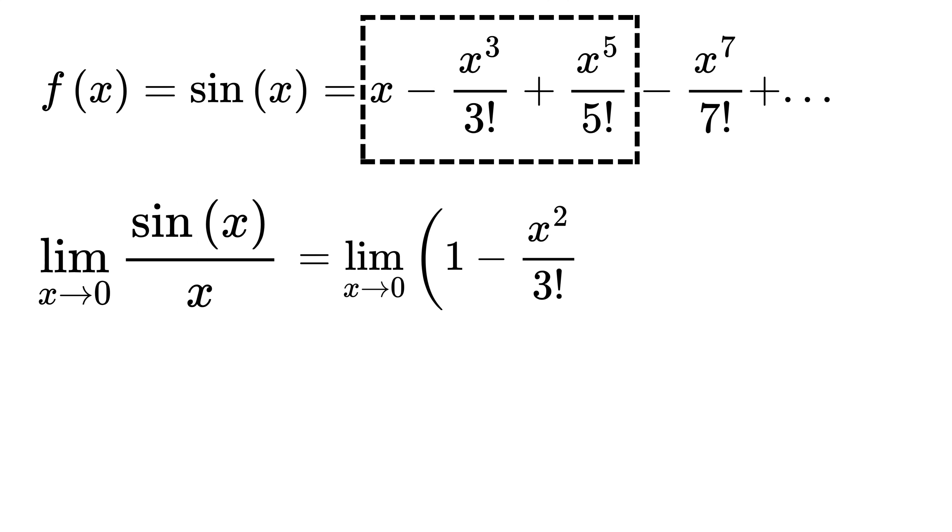x becomes 1, x³/6 becomes x²/6, x⁵/120 becomes x⁴/120, and so on. So our expression becomes 1 - x²/6 + x⁴/120 and so on.